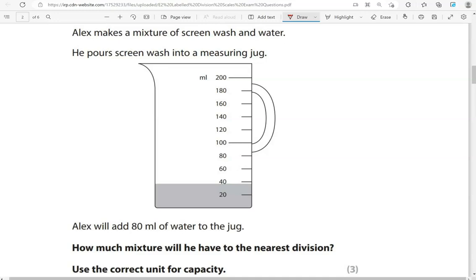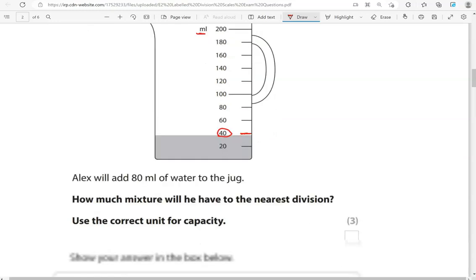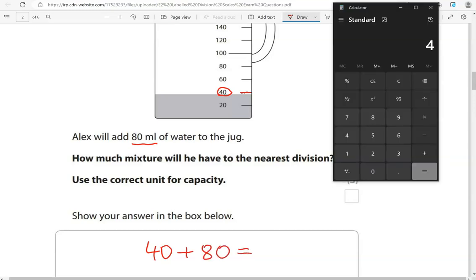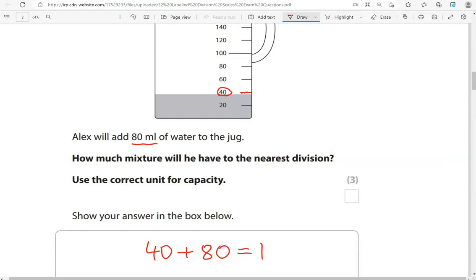So at the moment he has about 40 milliliters of screen wash. He's going to add 80 milliliters of water. So that is 40 plus 80, which equals 120 milliliters.